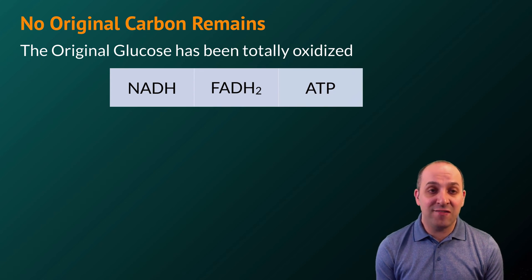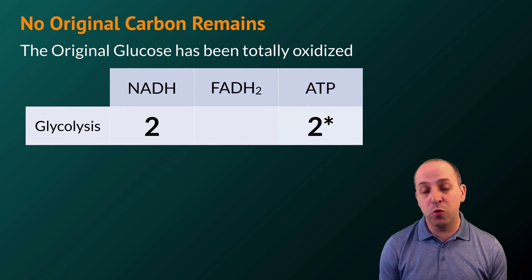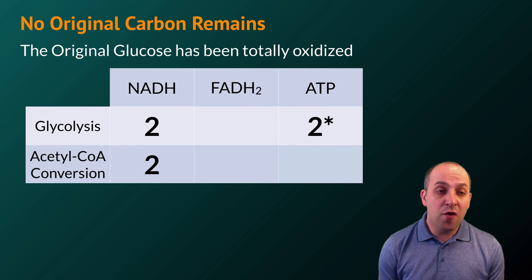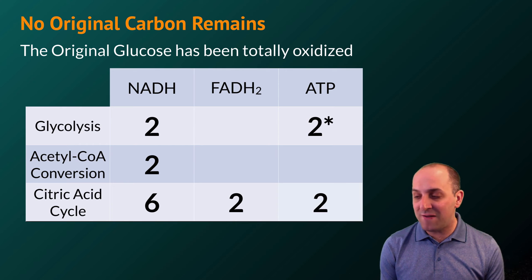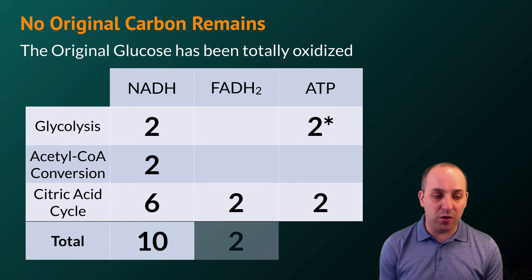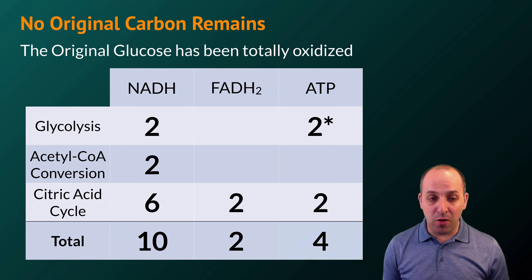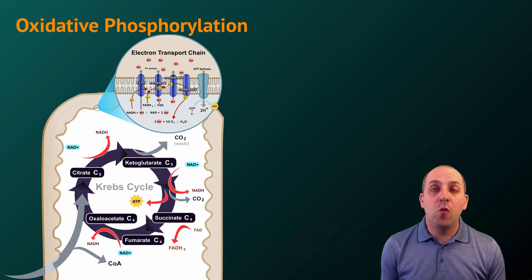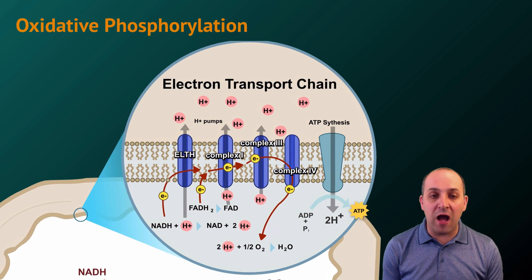Let's look at the accounting for each step leading up to this point, starting with glycolysis. In glycolysis, we produced two molecules of NADH and two net molecules of ATP. During the acetyl CoA conversion, we produced an additional two NADH molecules per original glucose. In the citric acid cycle, we produced an additional six NADH molecules, two FADH2 molecules, and two ATP molecules. In total, we now have 10 NADH molecules, two FADH2 molecules, and four ATP molecules. Those NADH and FADH2 molecules are storing electrons taken from our initial glucose, and we're now going to feed them into an electron transport chain during oxidative phosphorylation.